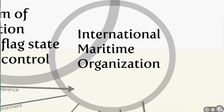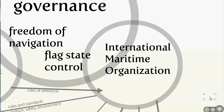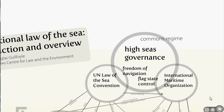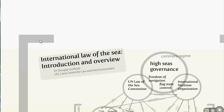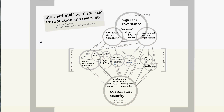We'll also talk throughout the course about the International Maritime Organization, which is the UN agency that takes the lead role in harmonizing states' interests between the individual and the collective — balancing the need for a commons regime for the oceans beyond national jurisdiction, but also the need to give coastal states a sufficient sense of control over the waters closest to them.